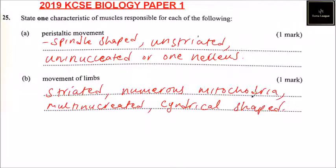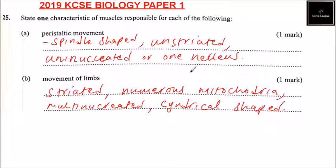So that's how you answer that. You need to state one characteristic to get one mark for part A, and one mark for part B. I've given you several options — whichever you remember, you should be able to answer this question. That brings us to the end of the Biology 2019 Paper 1. Wishing you all the best.